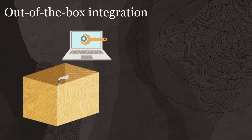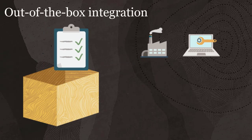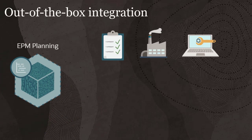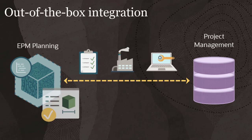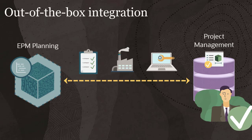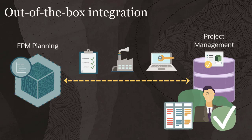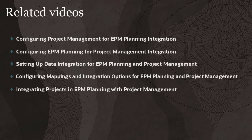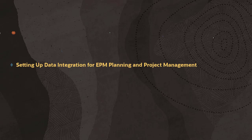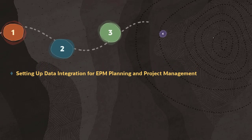You can integrate indirect, capital, and non-sponsored project types from the EPM Planning Projects module with Project Management. After you create and approve projects in the EPM Projects module, send them to Project Management for detailed task-level budgeting and control. This series covers the tasks to integrate EPM Planning and Project Management. In this third video, we'll look at the steps required to set up data integration for EPM Planning and Project Management.